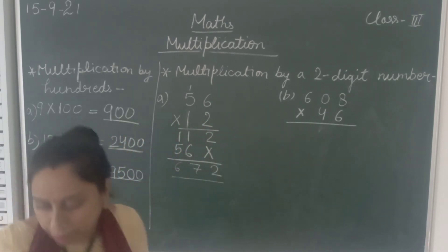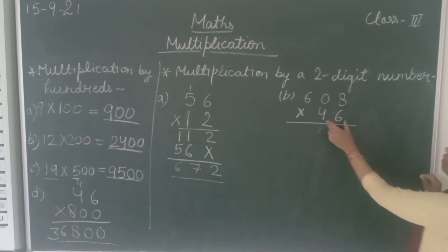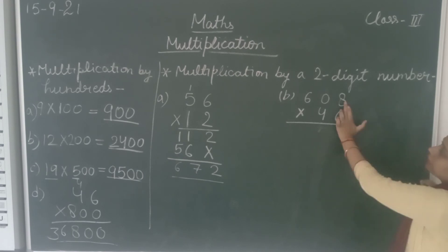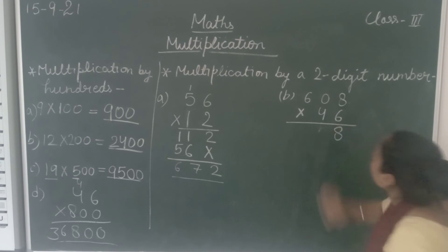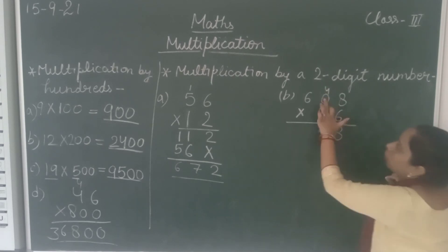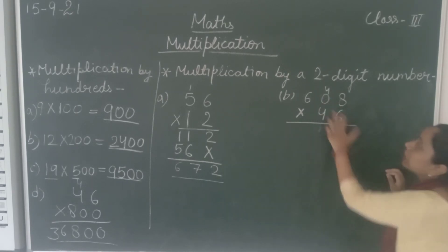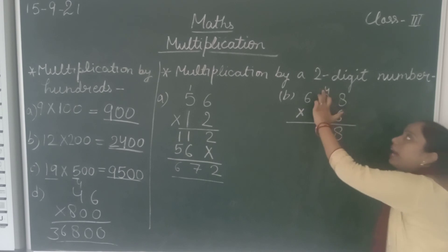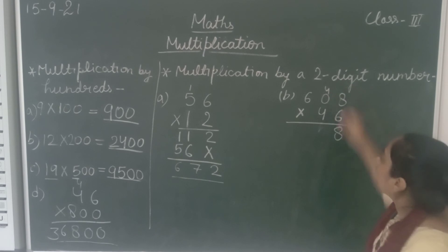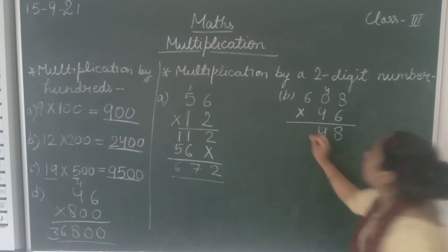Now let's multiply a 3-digit number by a 2-digit number: 608 × 46. First, take the ones digit 6. So 6 eights are 48: write 8, carry 4. Now 6 times 0 is 0, but we add the carry 4, so we get 4. Now 6 sixes are 36.